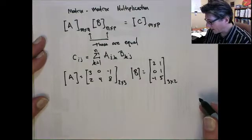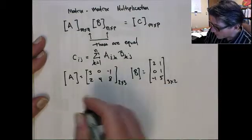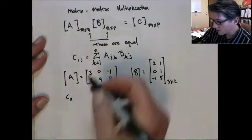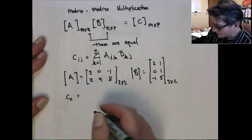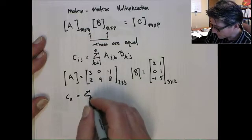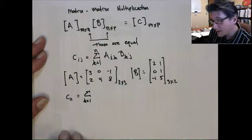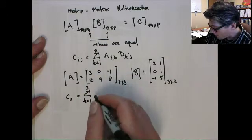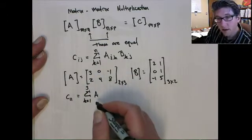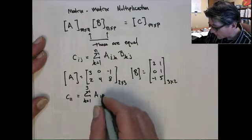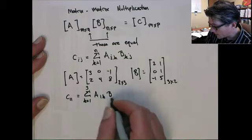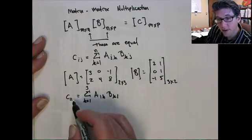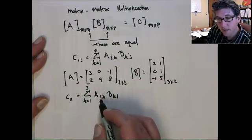So, okay, so for example, c11, right, using this rule would be the sum of k equals 1 to n, in this case n is 3, of a1k, bk1, because in this case i is 1 and j is 1, right, so i, j.